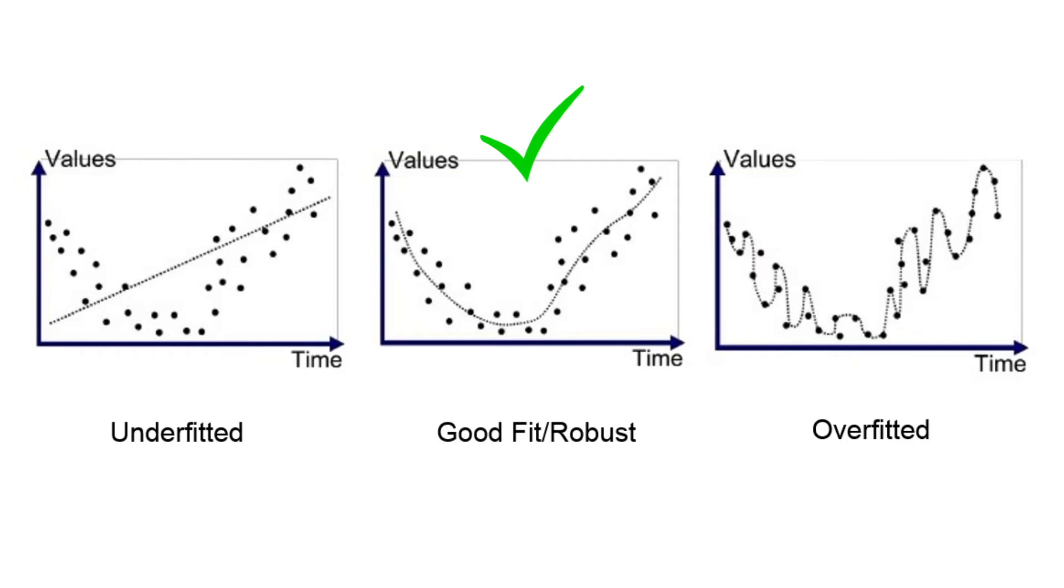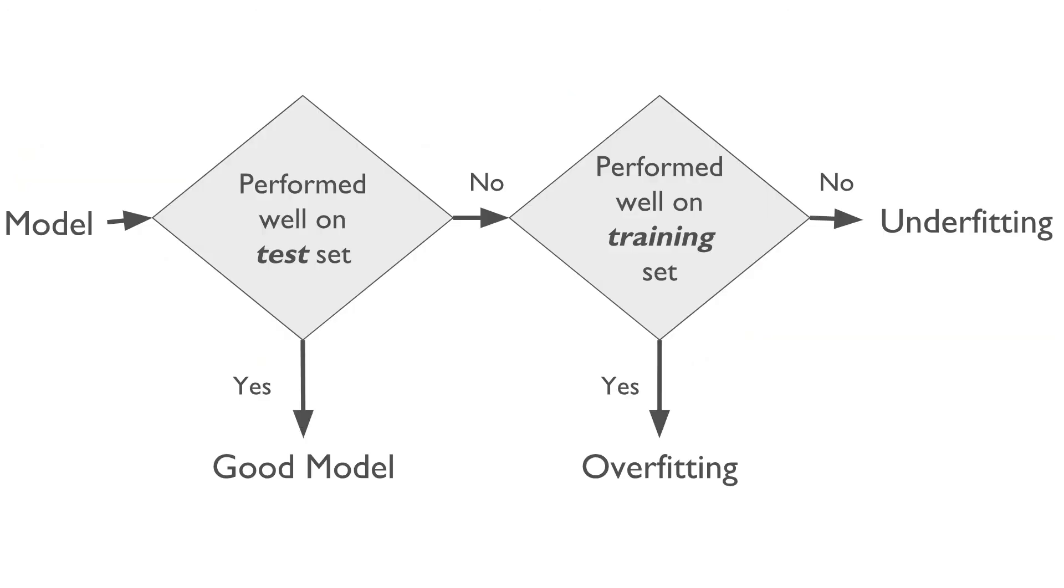It covers a majority of the points in the graph and also strikes the balance between underfitting on the left and overfitting on the right. Say there is a model which performed really bad on test data, the data it has never seen before. This bad performance could be because of underfitting or overfitting. We cannot say anything right now.